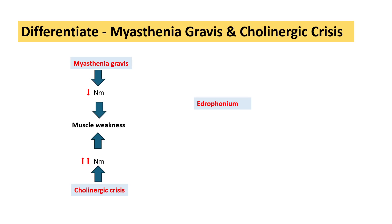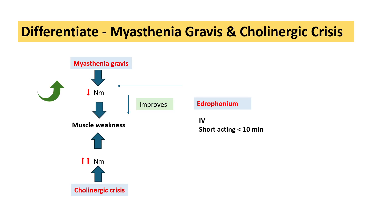When we administer edrophonium — a short-acting anticholinesterase given via the intravenous route, acting for less than 10 minutes — in myasthenia gravis it improves muscle weakness by increasing acetylcholine levels at the neuromuscular junction. In cholinergic crisis, however, administration of edrophonium will worsen the muscle weakness.